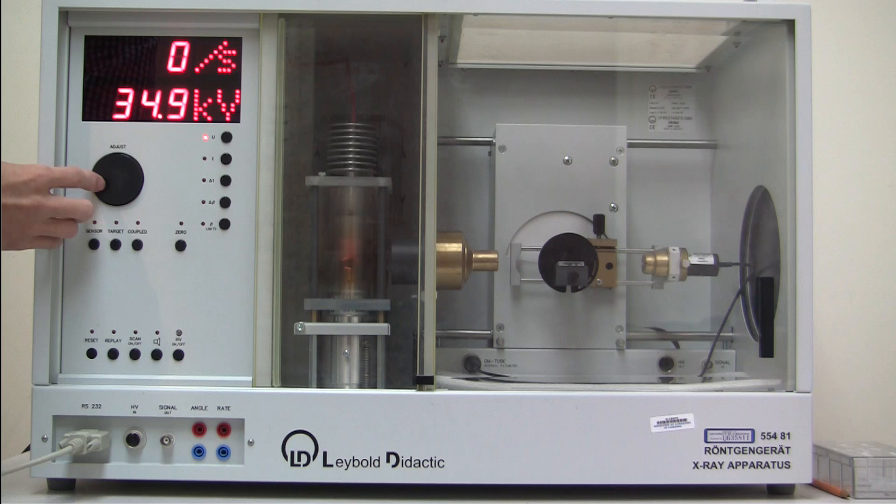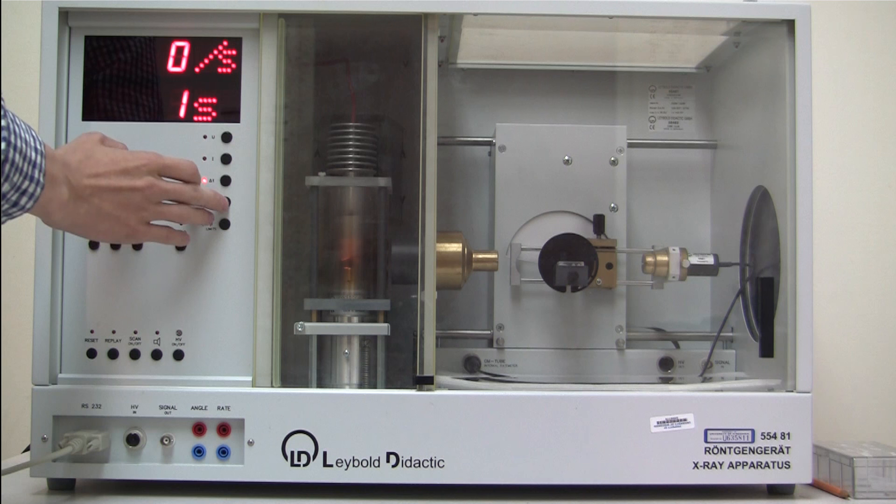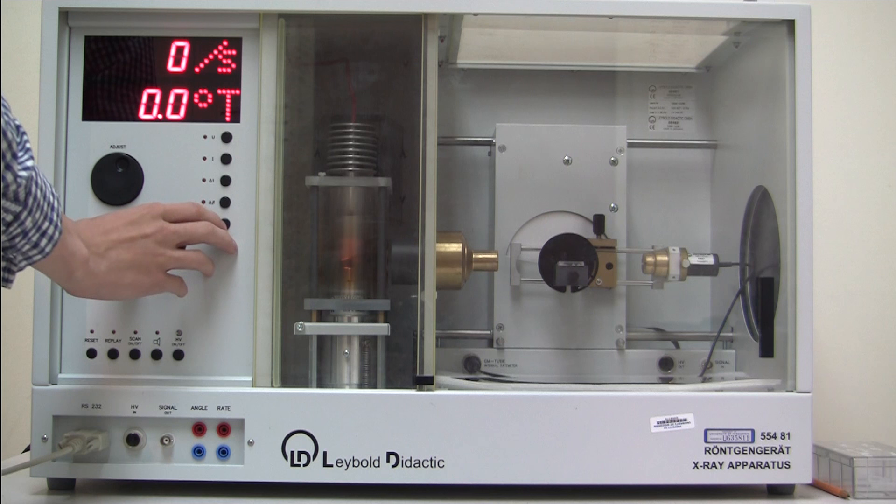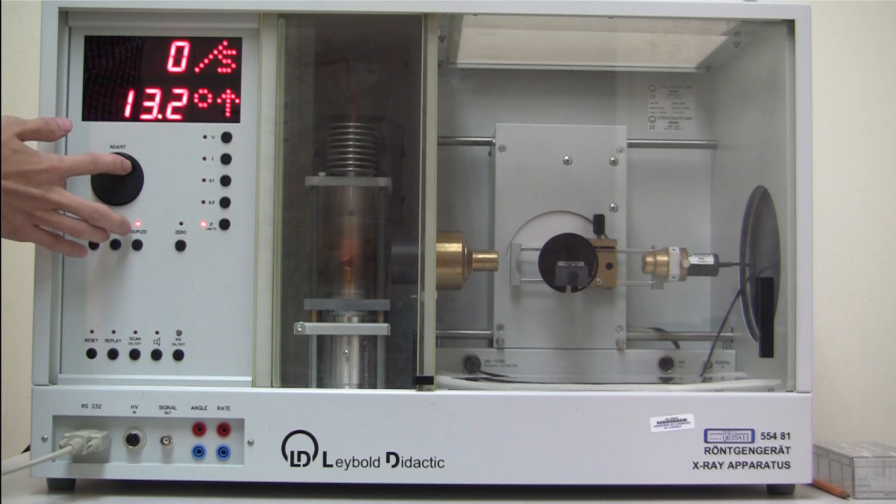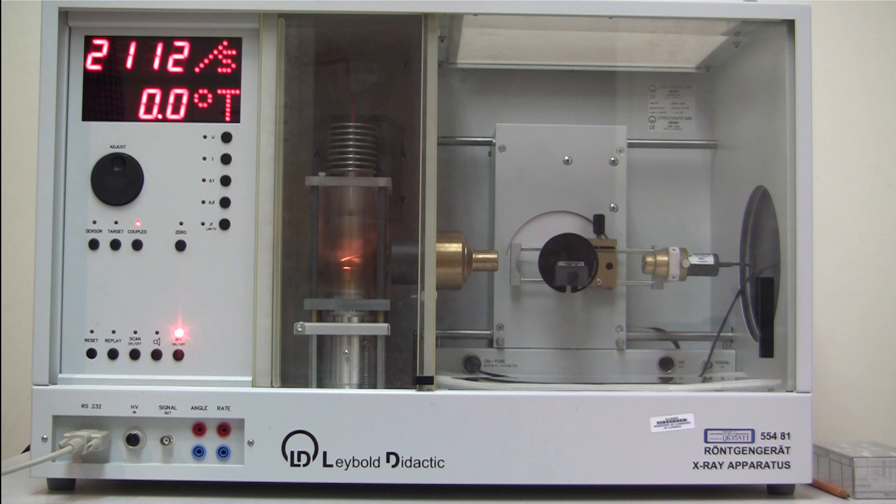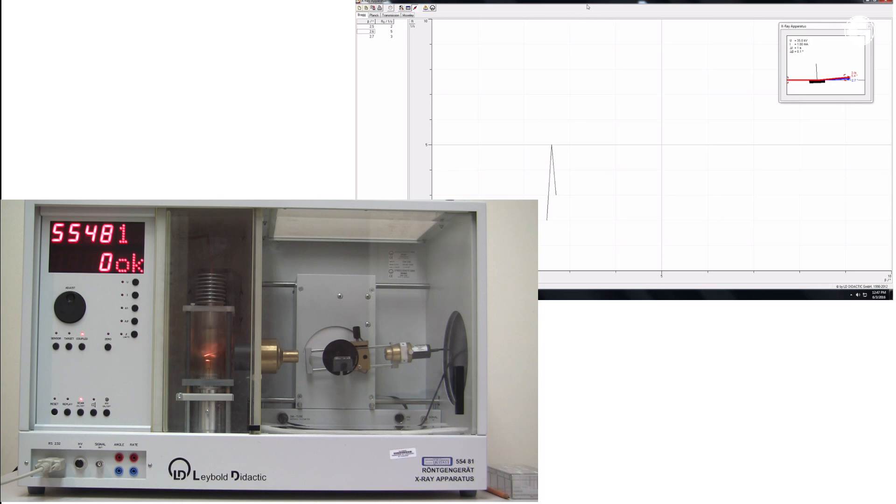Set the X-ray tube high voltage to 35 kV. Set the current to 1 mA. Set the measuring time per angular step to 1 second. And then set the angular step size to 0.1 degree. Press the coupled key to activate the electronic coupling of the target rotation and sensor rotation. Click on the beta limits key once for the lower limit and twice for the upper limit. Set the lower limit to 2.5 degrees and the upper limit to 10 degrees. Press the HV on/off button to apply high voltage. Then start the scan by pressing the scan on/off button.